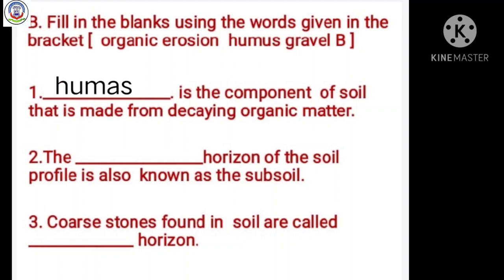Number 2: The dash horizon of the soil profile is also known as the subsoil. Answer is B. Number 3: Coarse stones found in soil are called dash. Answer is gravel.